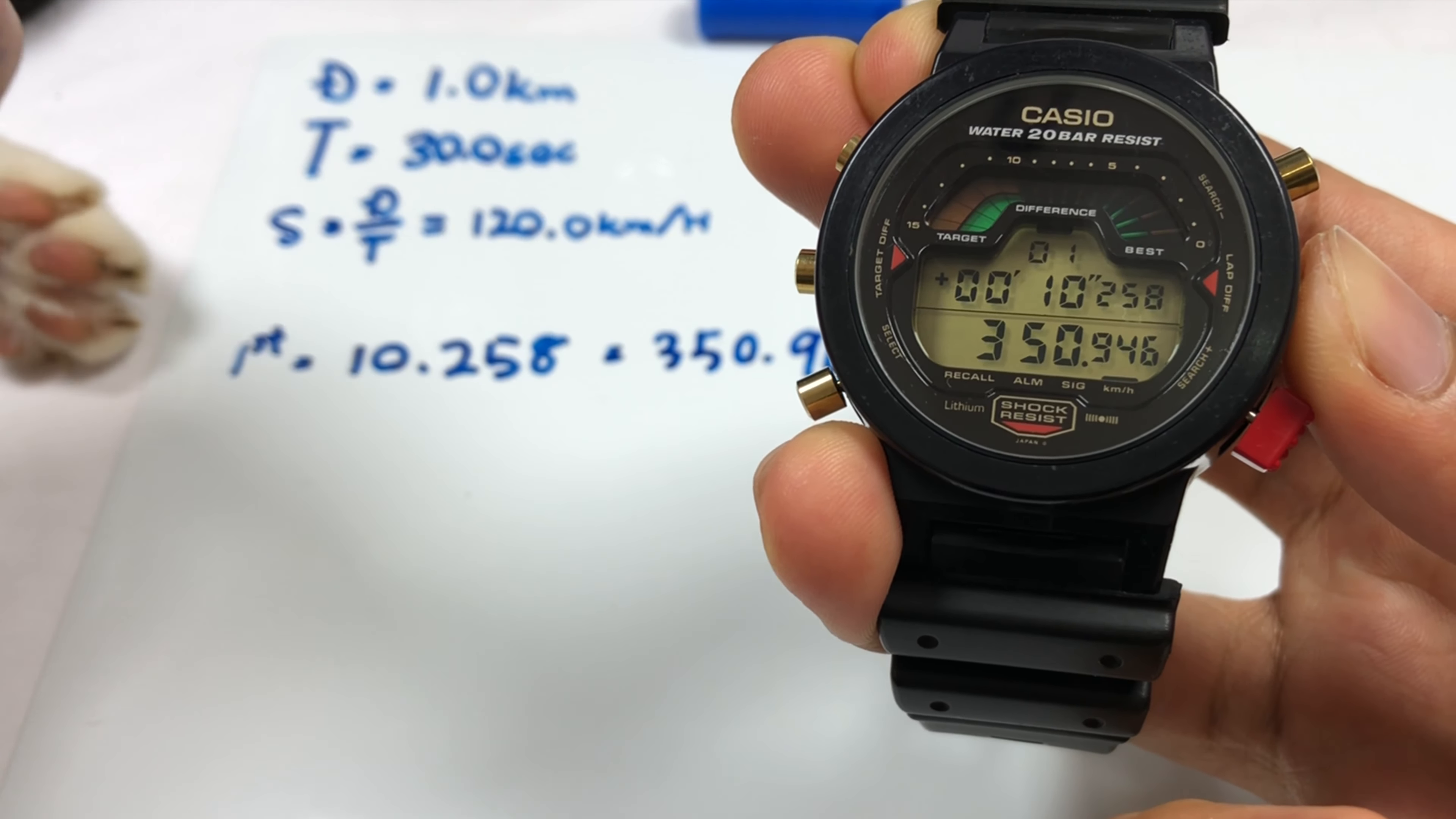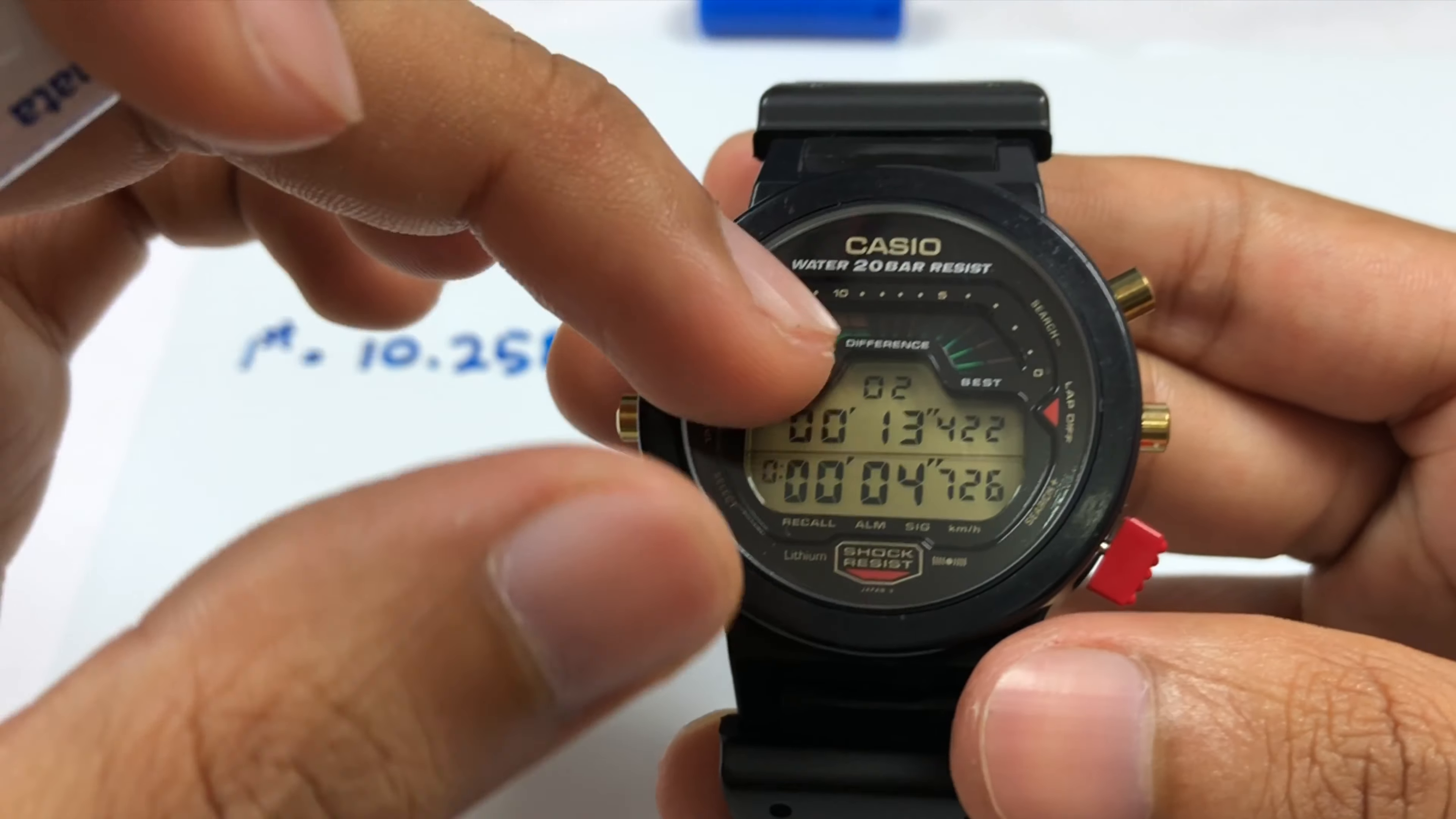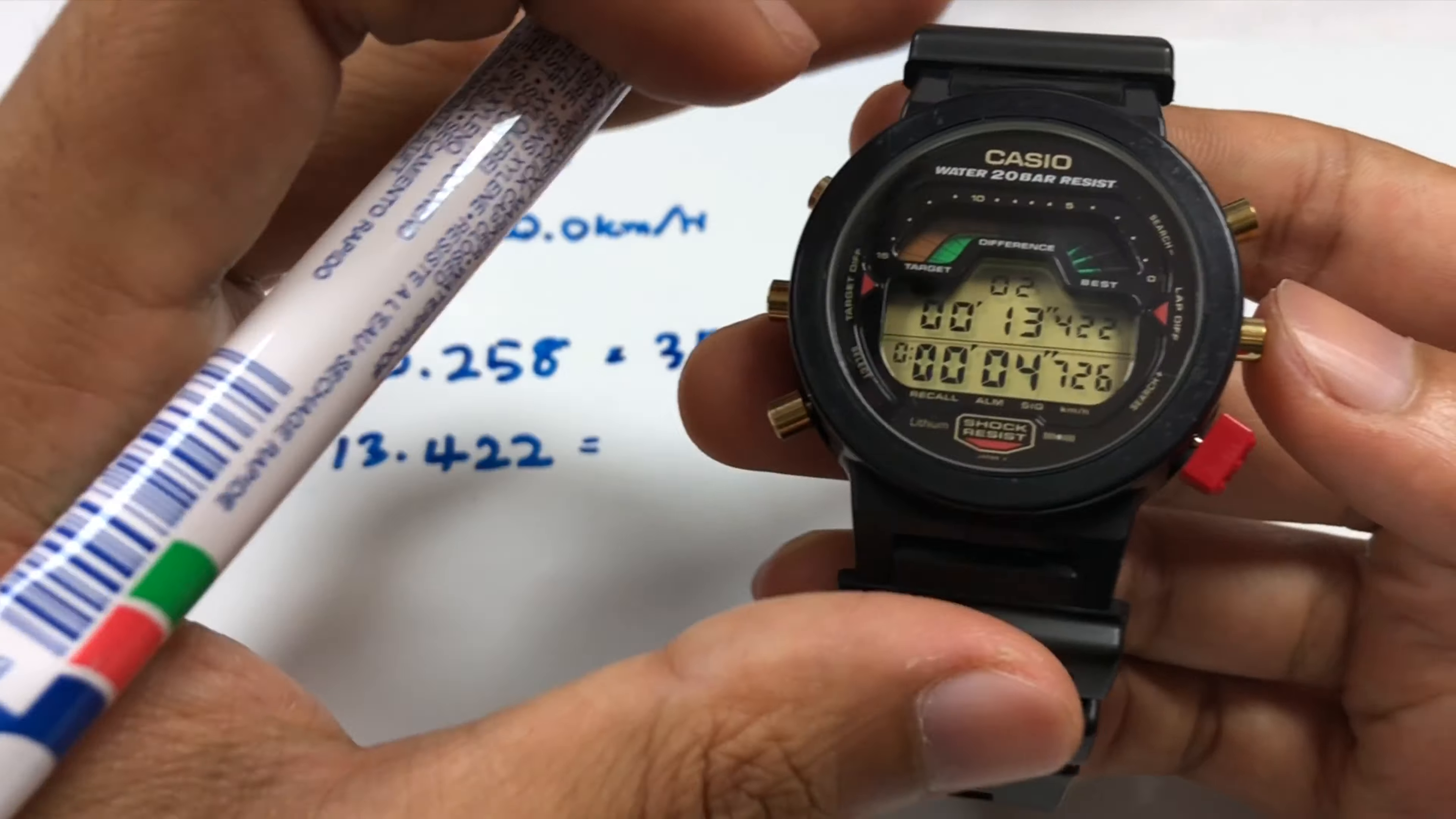Let's proceed with the second example. Our second lap will begin. This will be the first lap time, and down here will be the second lap time. There it is, 13.422. It will beep for three seconds because it's still better than our target time. Second lap is 13.422 seconds at a speed of 268.216 kilometers per hour.